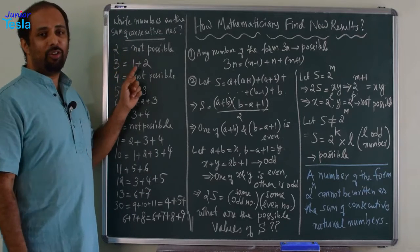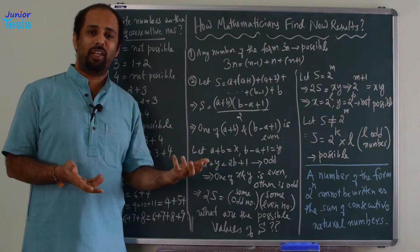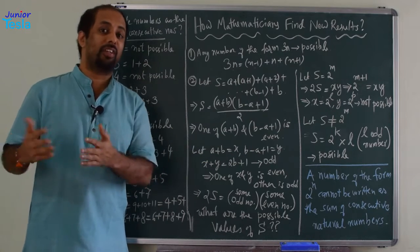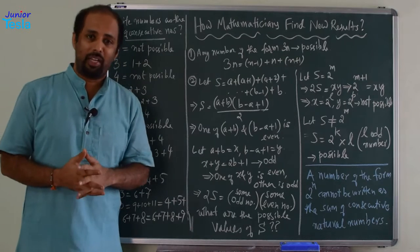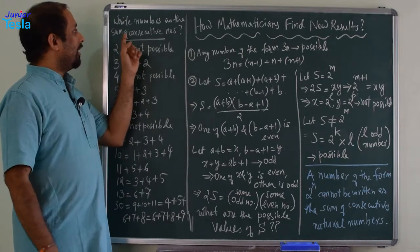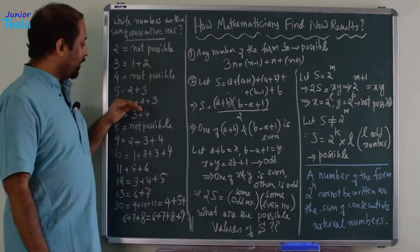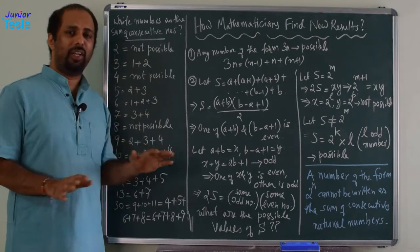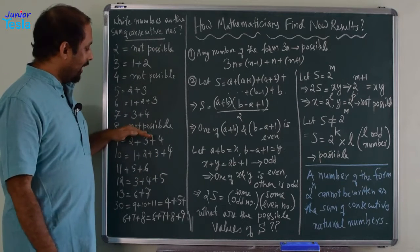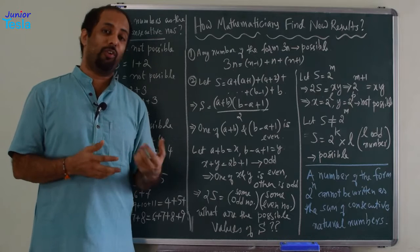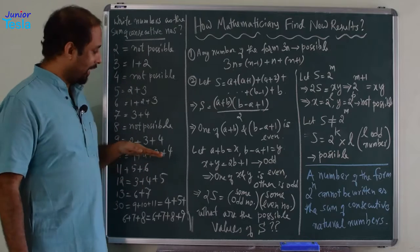Next number 3: 3 is equal to 1 plus 2. Then 4 — again not possible, because 4 can only be written as 2 plus 2, but it is not the sum of consecutive numbers. So, 4 not possible. 5 is equal to 2 plus 3. Then 6 is equal to 1 plus 2 plus 3 — it is sum of consecutive terms, and I am not saying there should be only 2 terms. Then 7 is equal to 3 plus 4. Then 8 — you can write it as 3 plus 5 or 4 plus 4, but in either case it is not consecutive natural numbers. So, 8 again not possible.